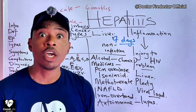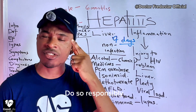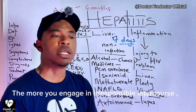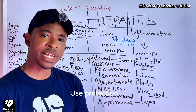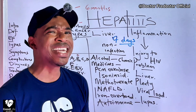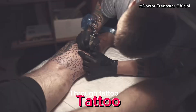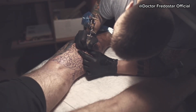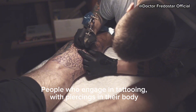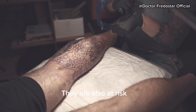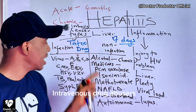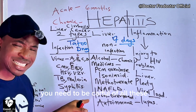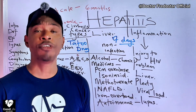Number two — if you want to have sex, use your sense. Don't just do it anyhow up and down, because the more partners you have, the higher your risk. Use protection. Also, people can get hepatitis through tattoos and piercings — when they do it in unhygienic conditions and share instruments. Drug abusers who share needles can also get infected — be careful.